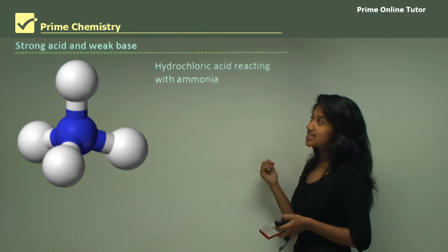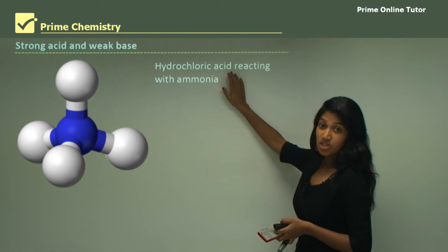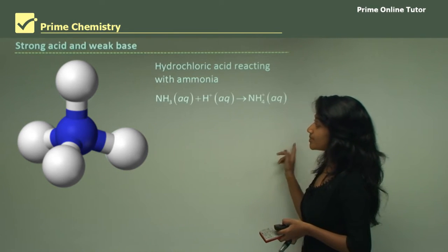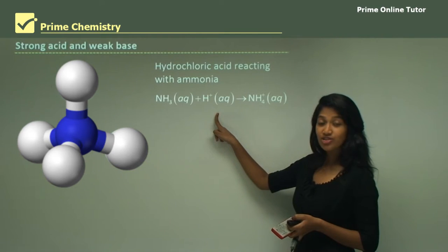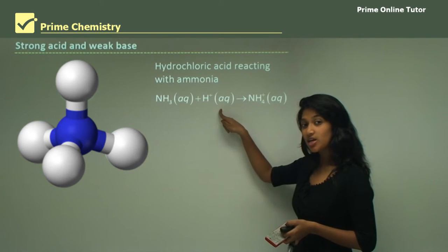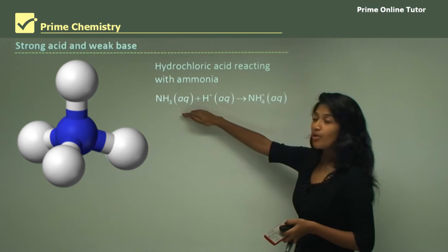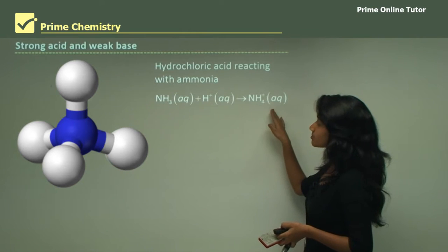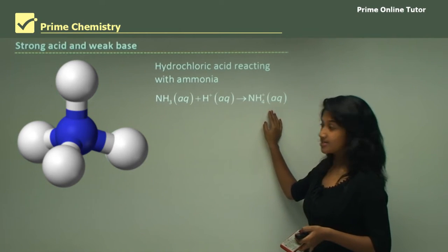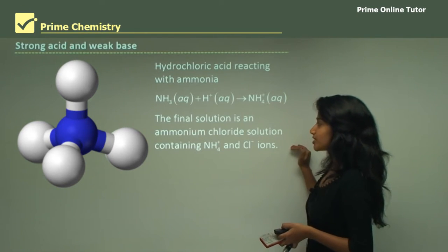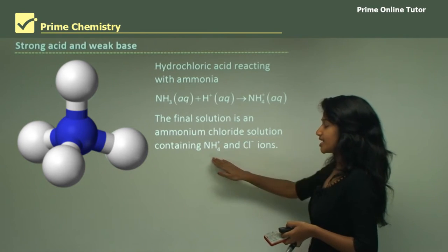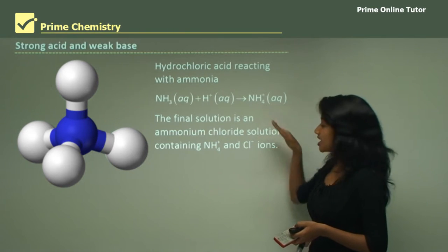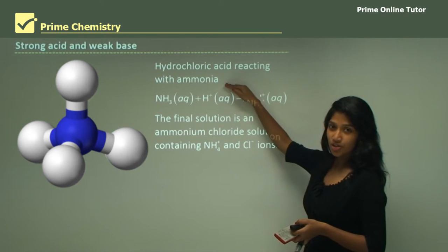Strong acid and weak base: hydrochloric acid is a strong acid, and a weak base would be ammonia. Ammonia reacts with the hydrogen ions from hydrochloric acid, which has fully ionized. However, ammonia cannot completely dissociate because it's a weak base, and the product is ammonium ions. The final solution is an ammonium chloride solution containing ammonium ions (from the reaction) and chloride ions (from the hydrochloric acid).